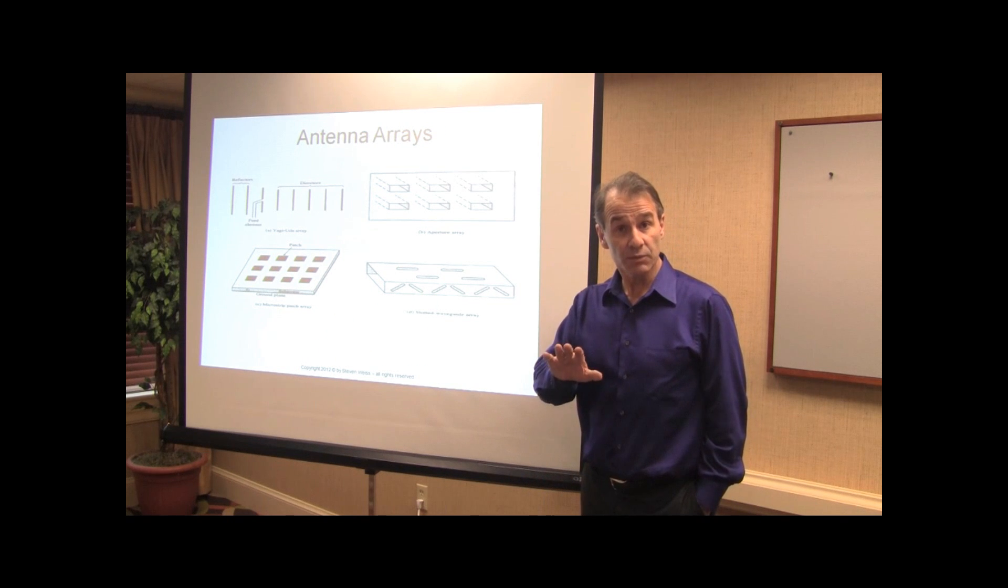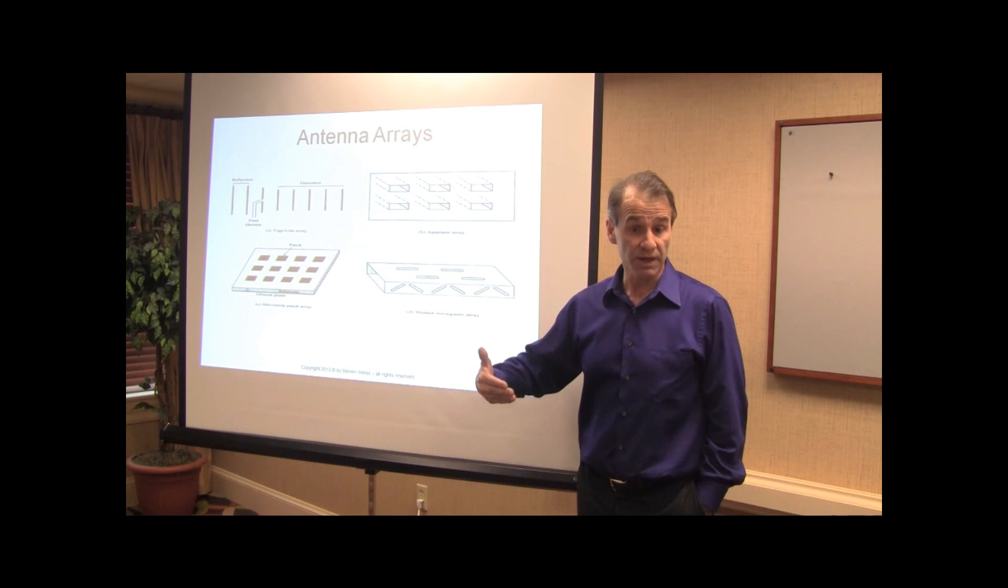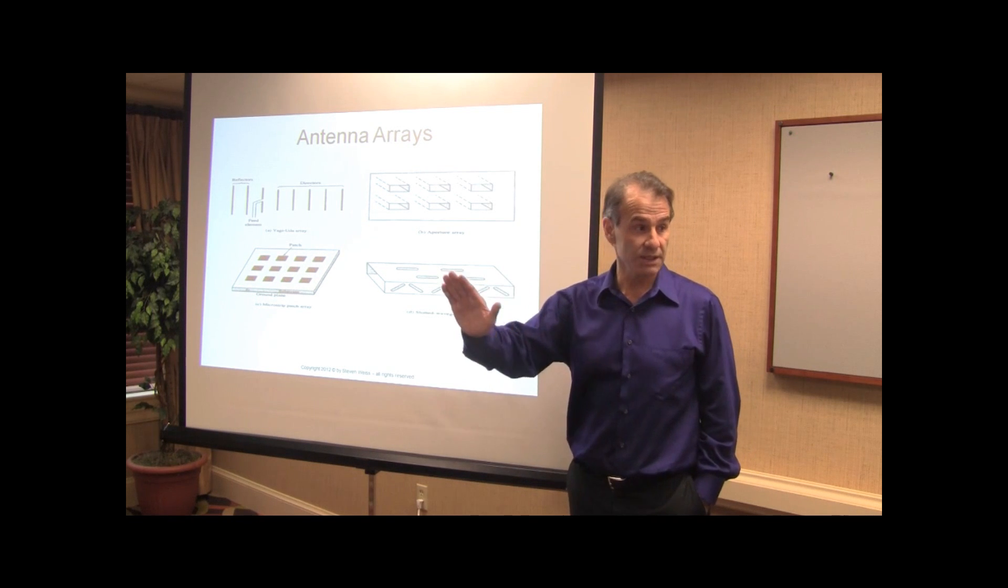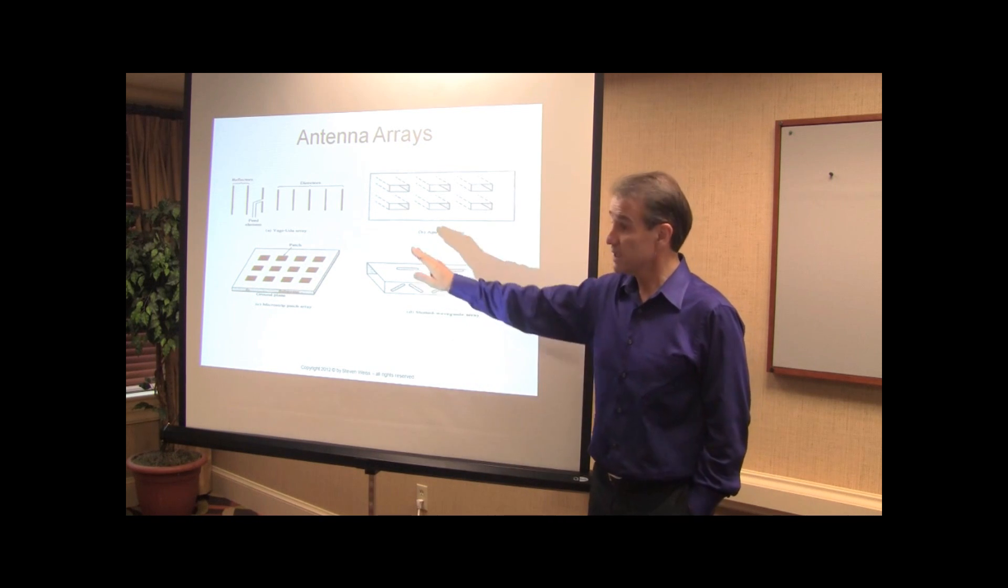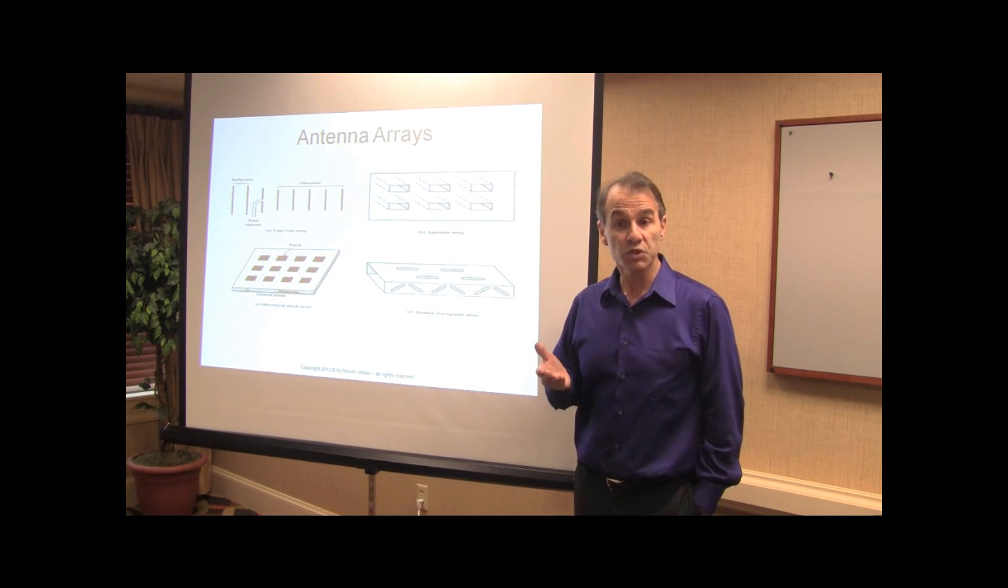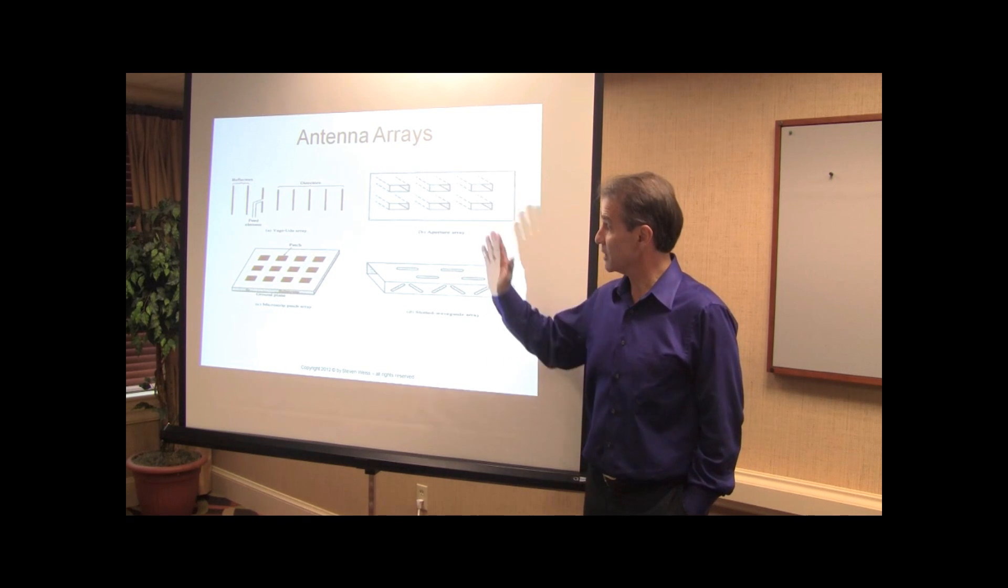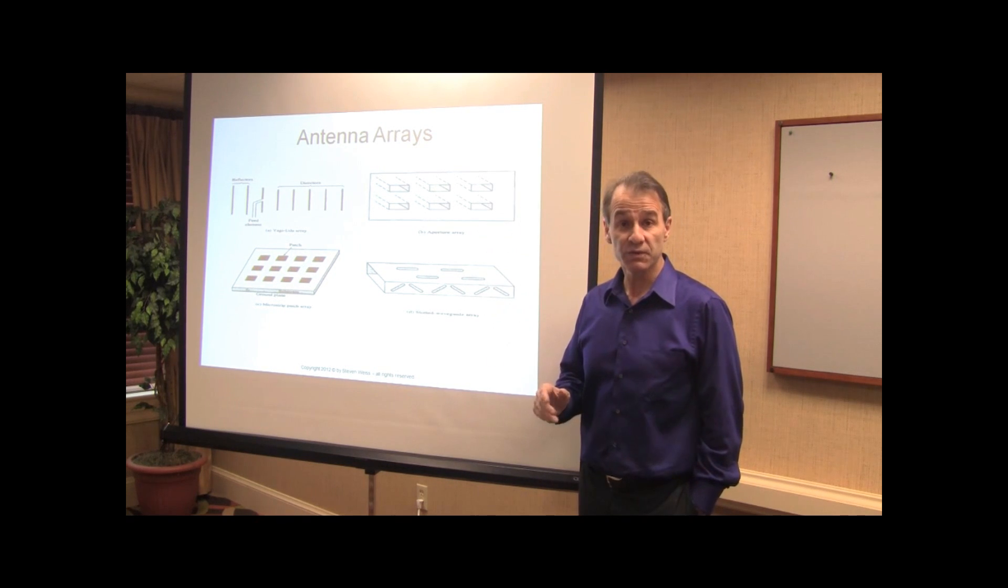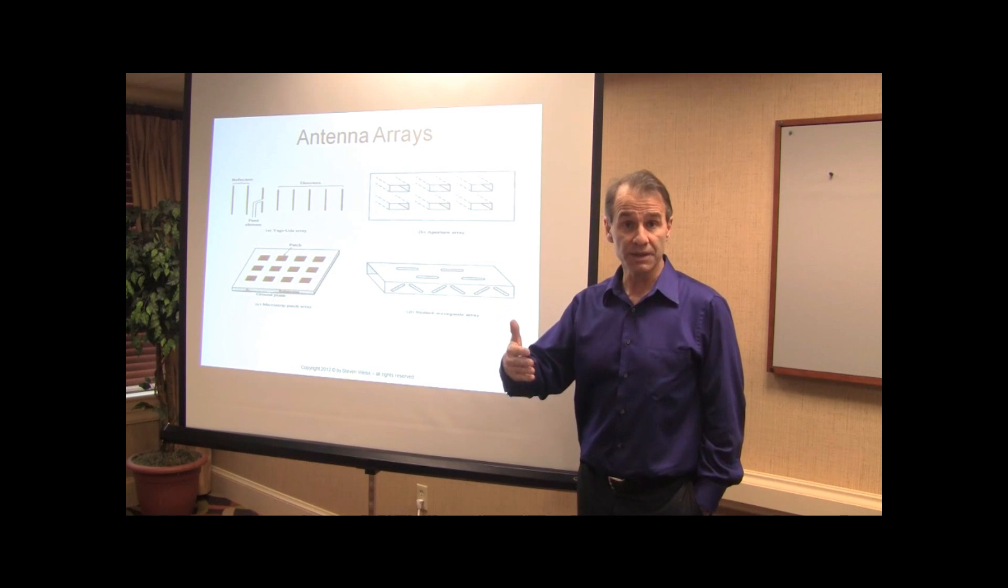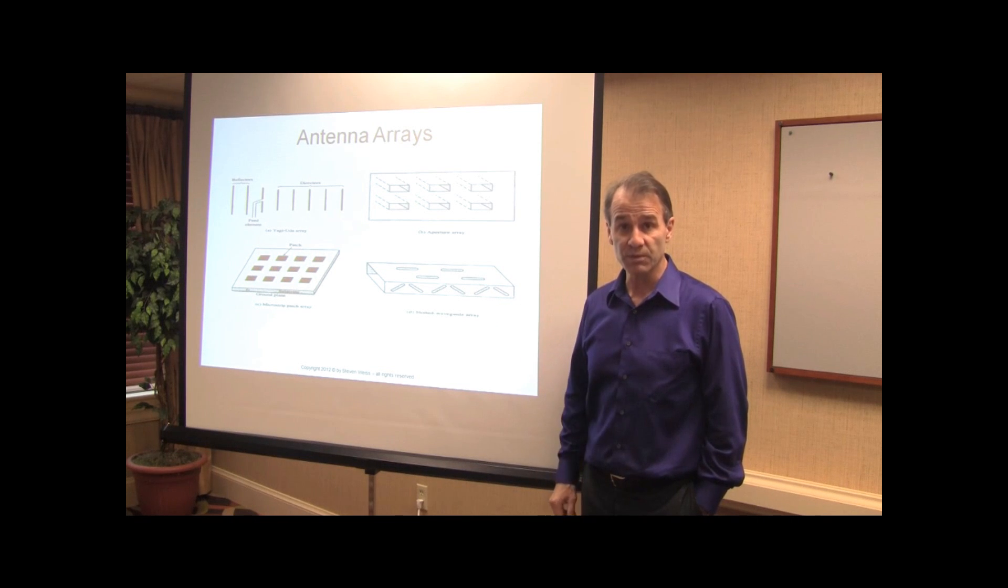And then we would move on in day number two to antenna arrays. And we can take any element, a horn antenna, a dipole antenna, a loop antenna, place it in an array configuration, and then on the second day of the course, we examine the implications of putting an antenna in an array. What are mutual coupling effects? What are scanned blindness effects? What are the effects of grating loops? And how can we mitigate these sometimes adverse effects to optimize the performance of the array?